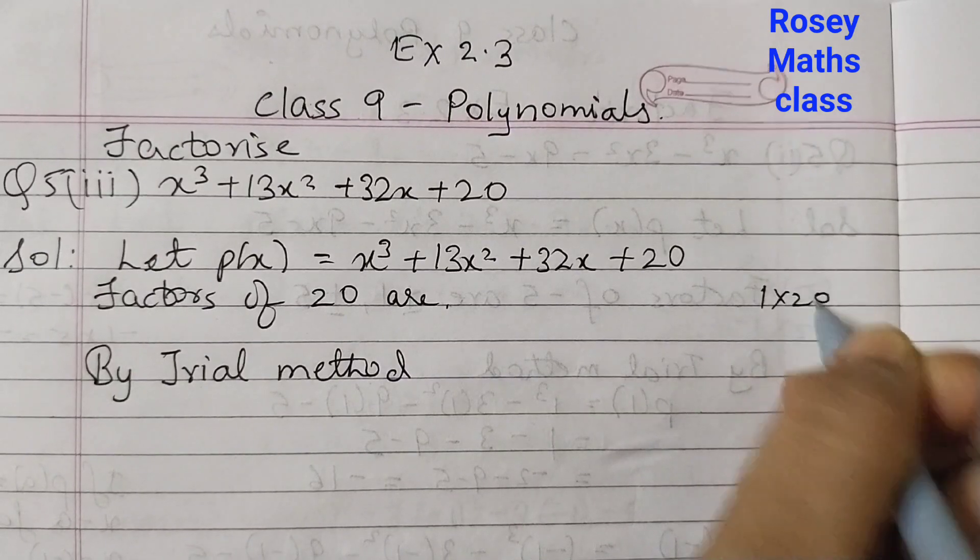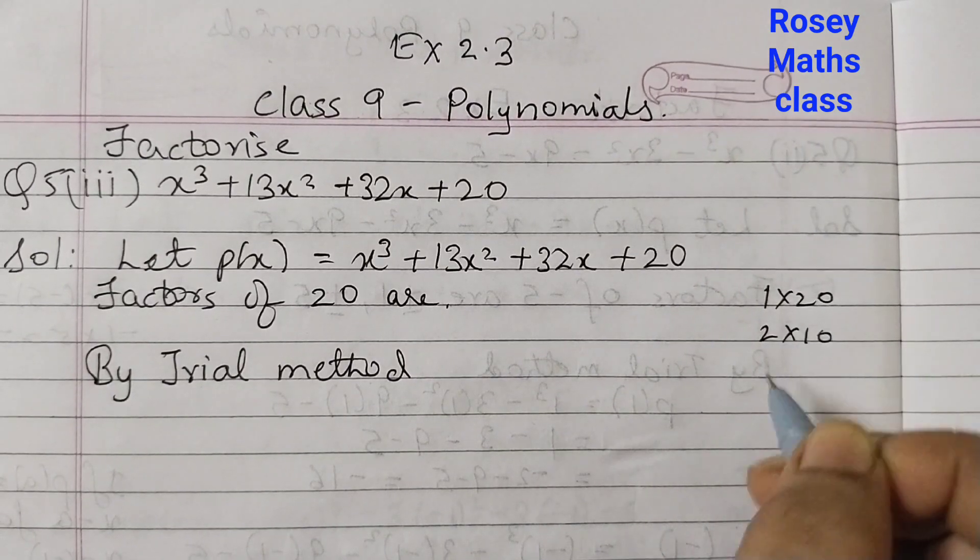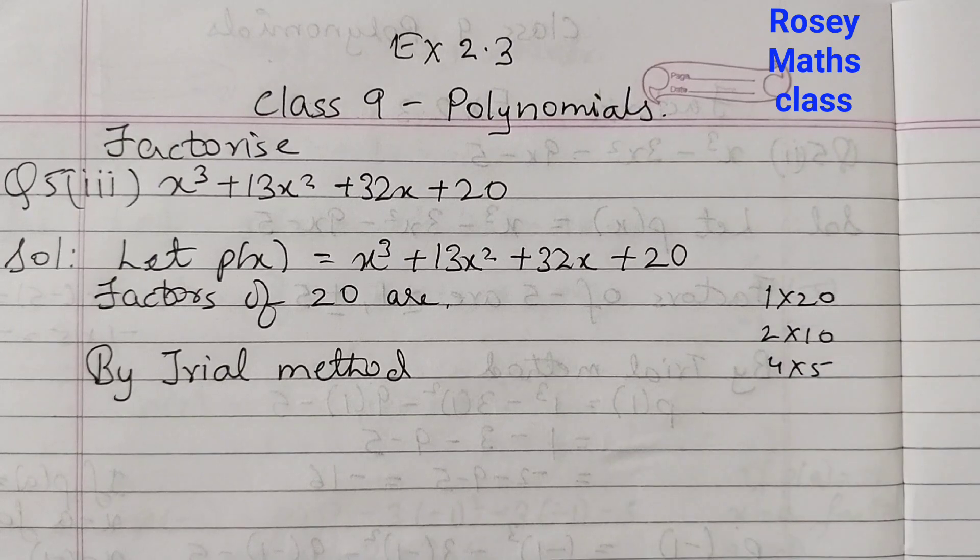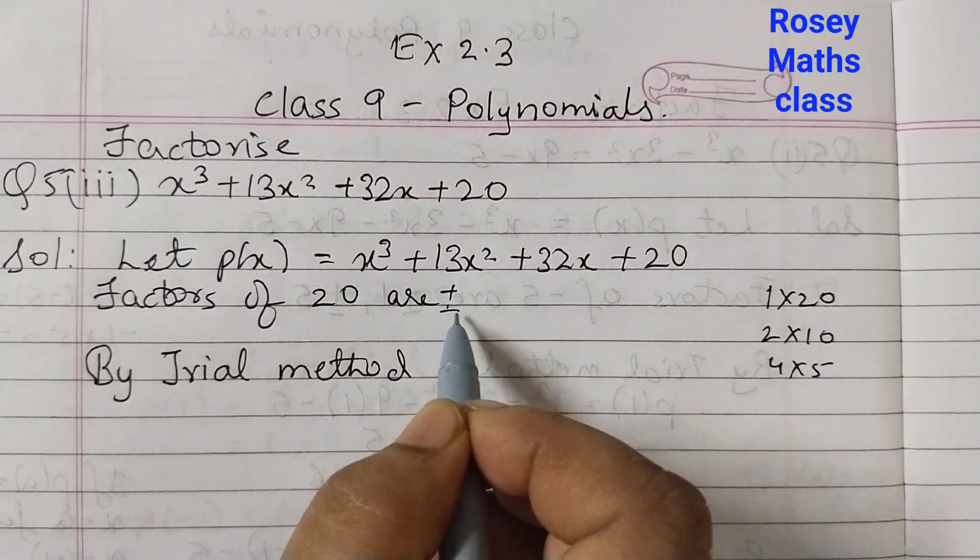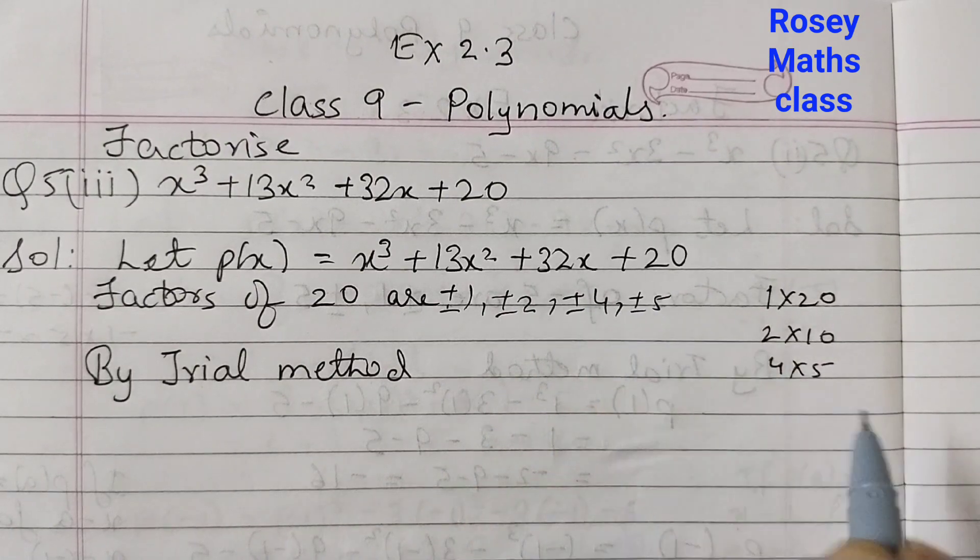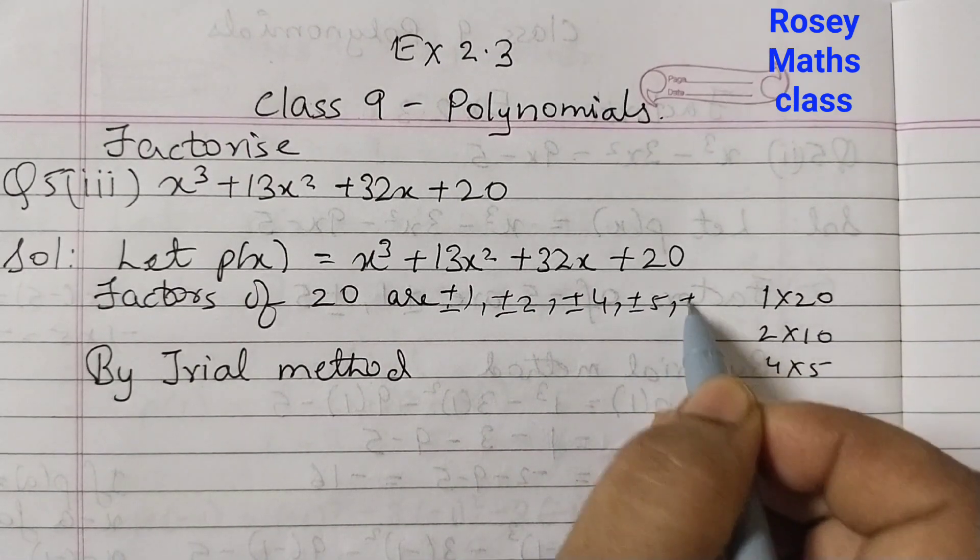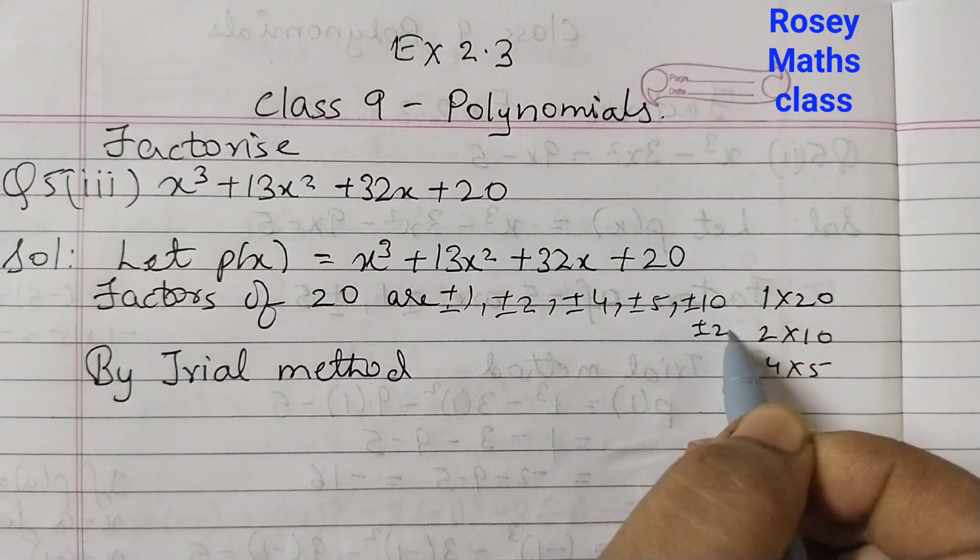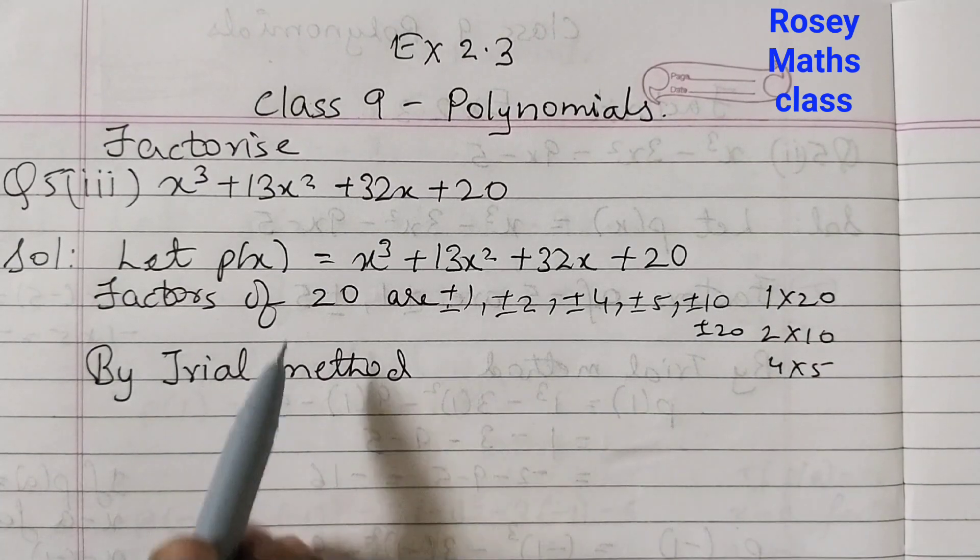1 × 20 = 20, 2 × 10 = 20, 4 × 5 = 20. So we can write ±1, ±2, ±4, ±5, ±10, and ±20. These are the factors of 20.